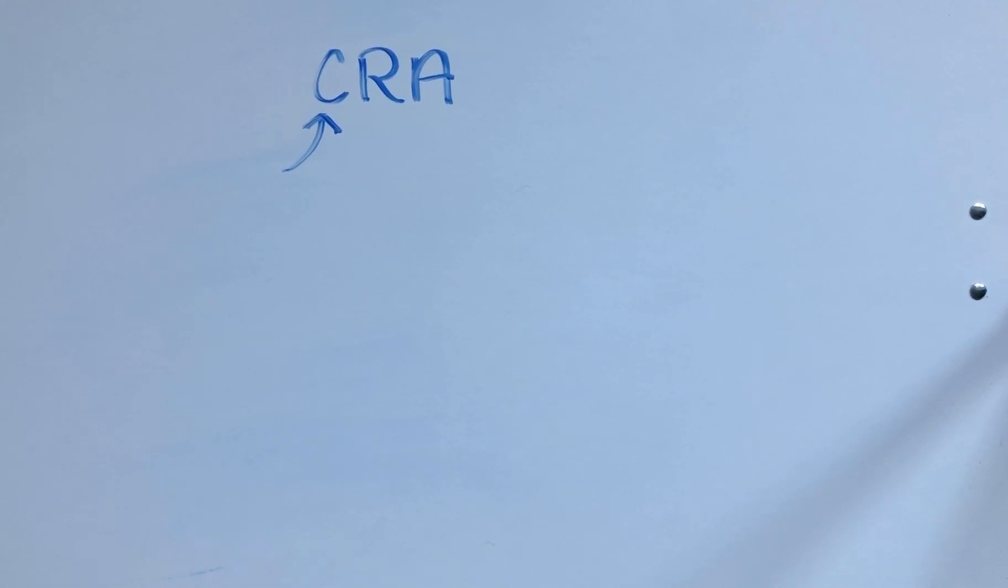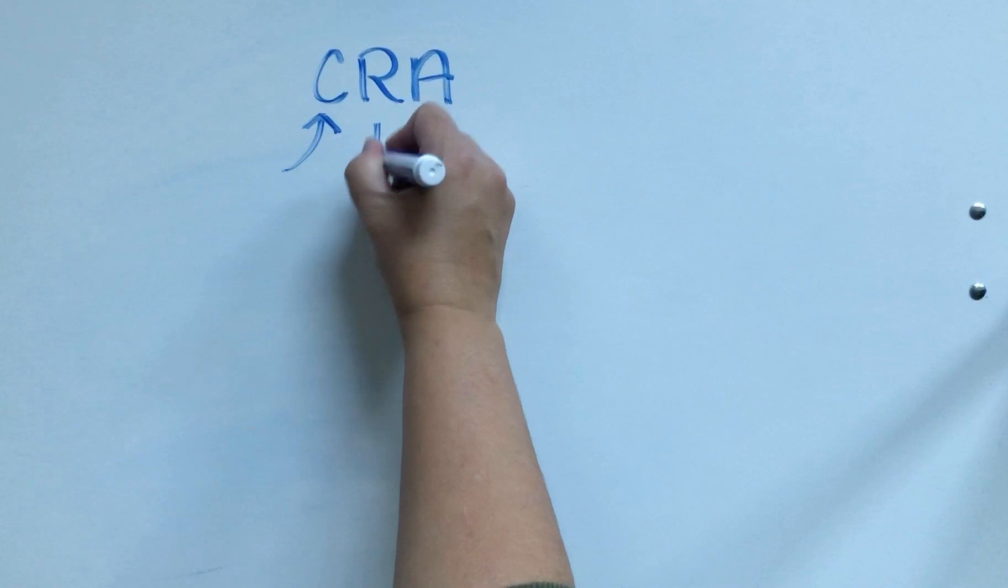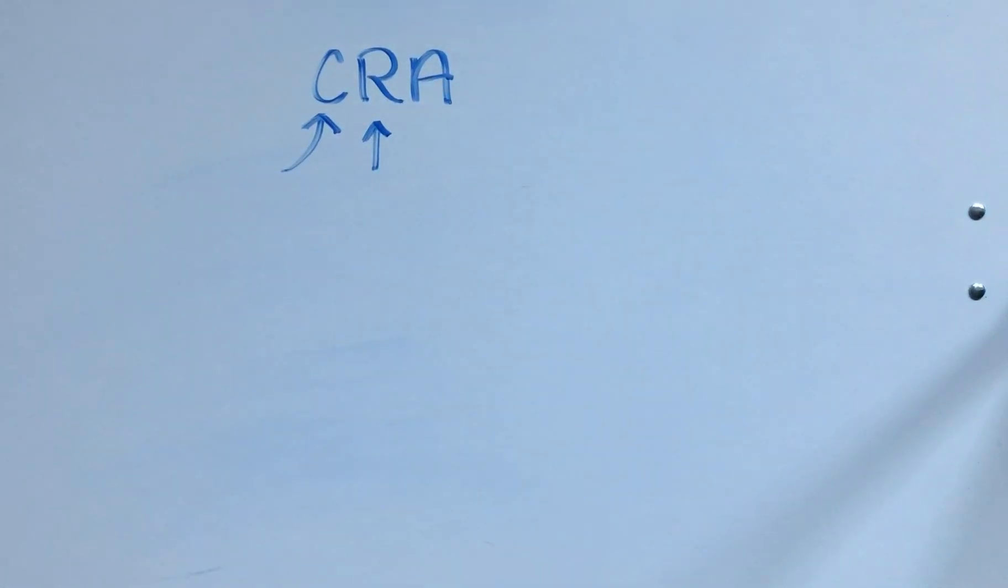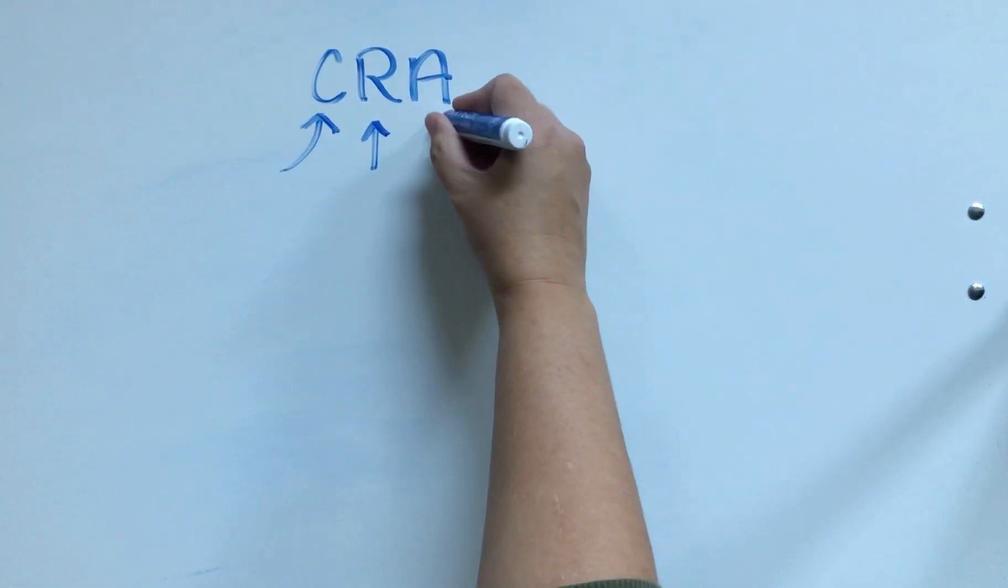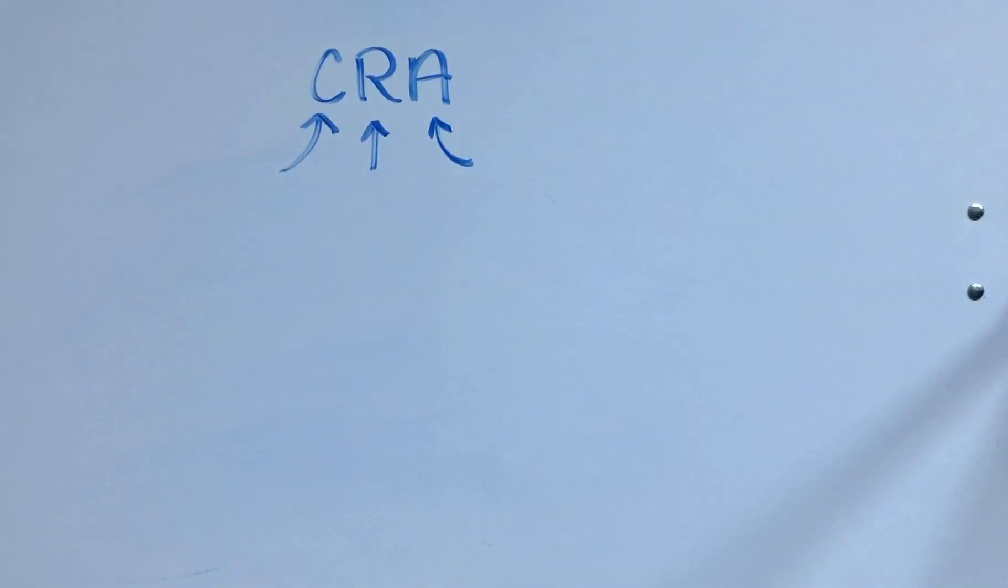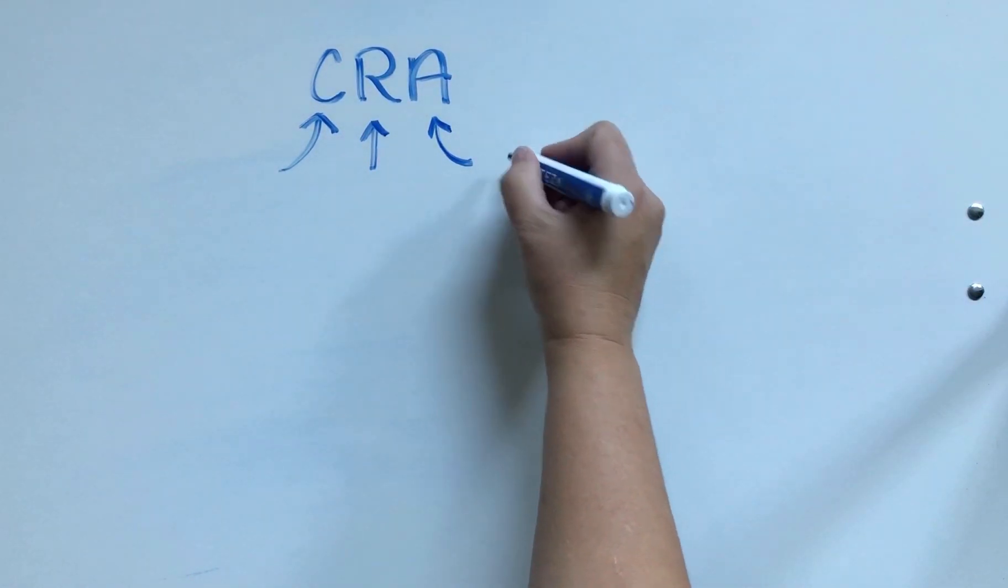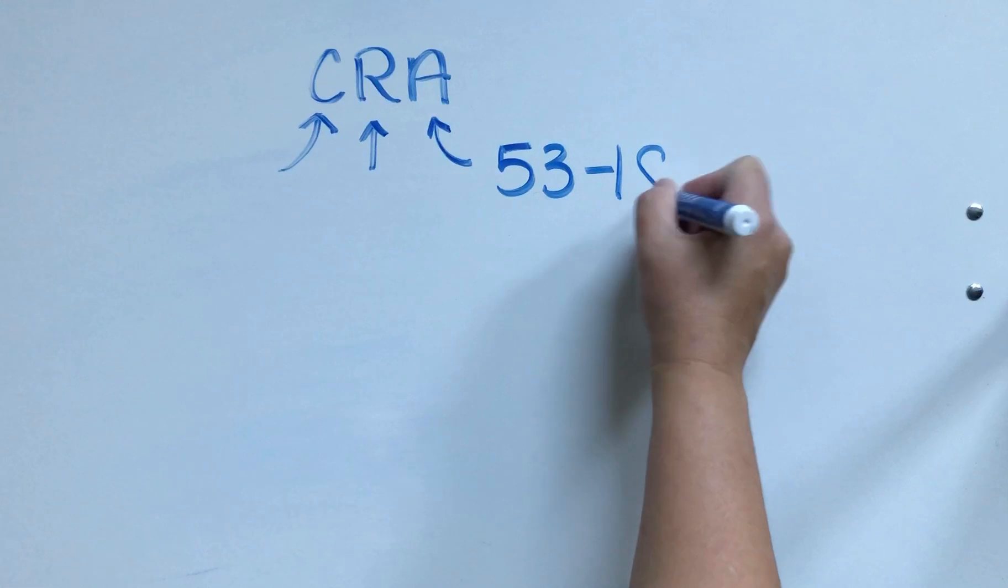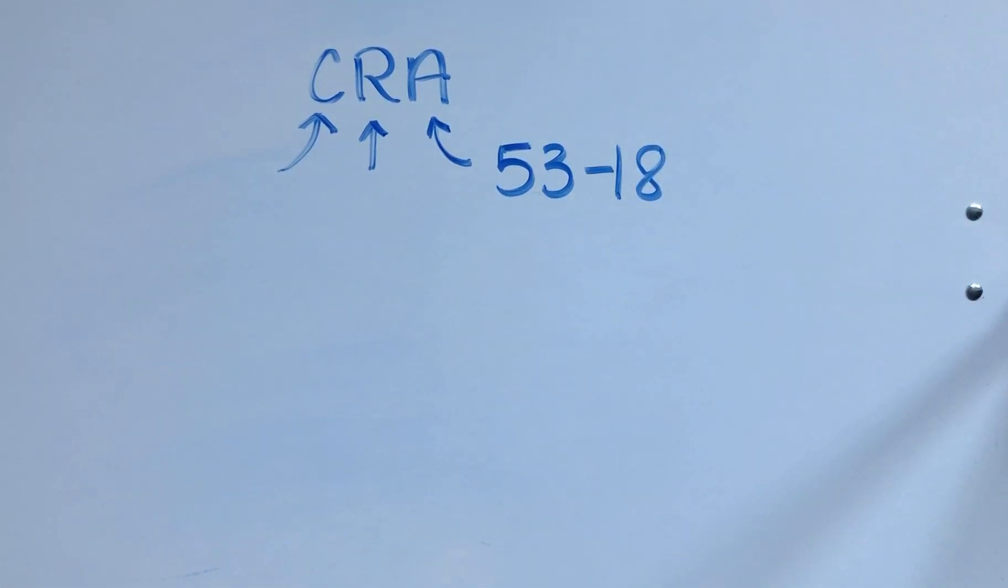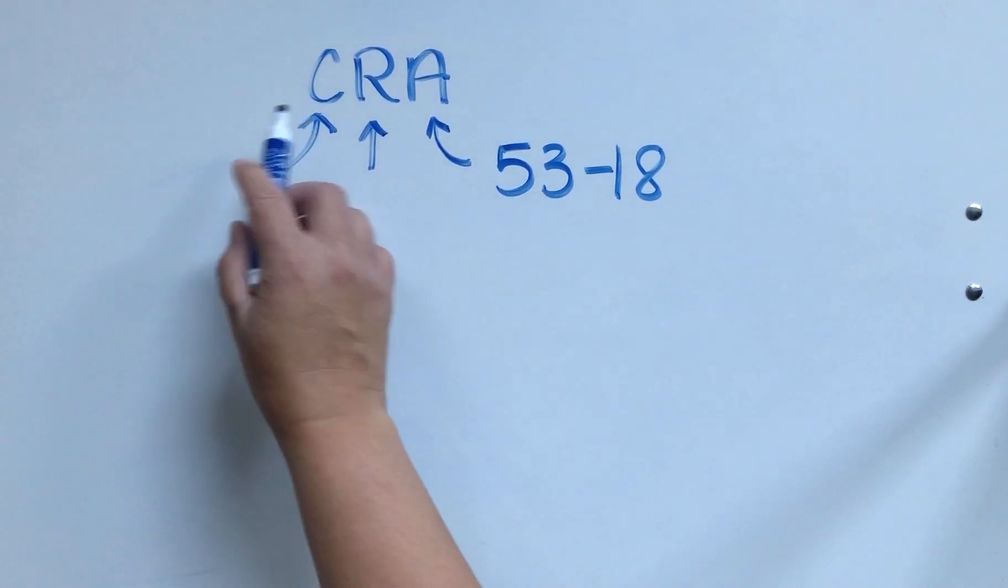Representational is when we're drawing models, and the number line that I'm about to show you would fall into that category. Abstract is when we actually get to the numbers and the symbols. So for example, 53 subtract 18, that's abstract. So we don't want to start there. We want to start with the concrete first and the representational.